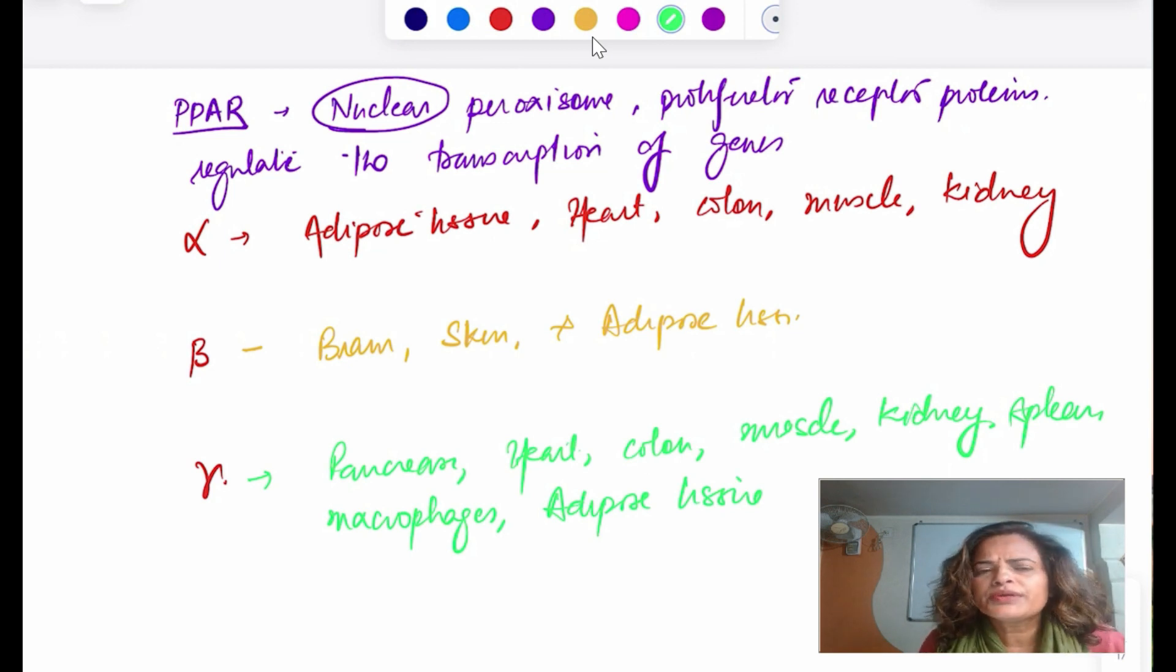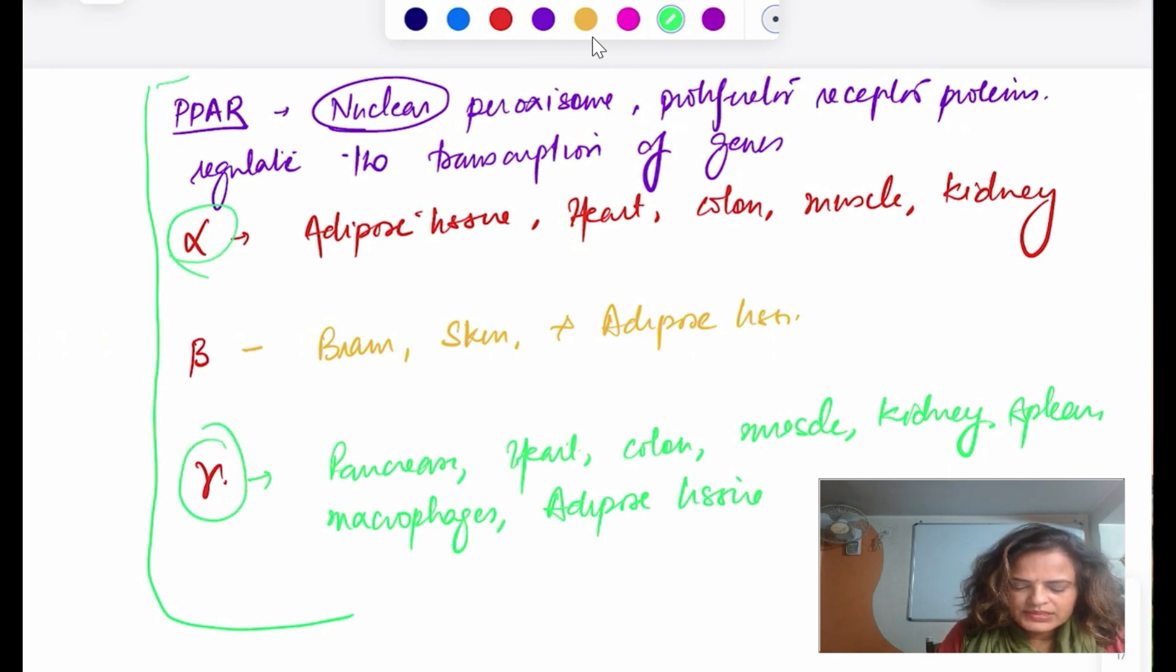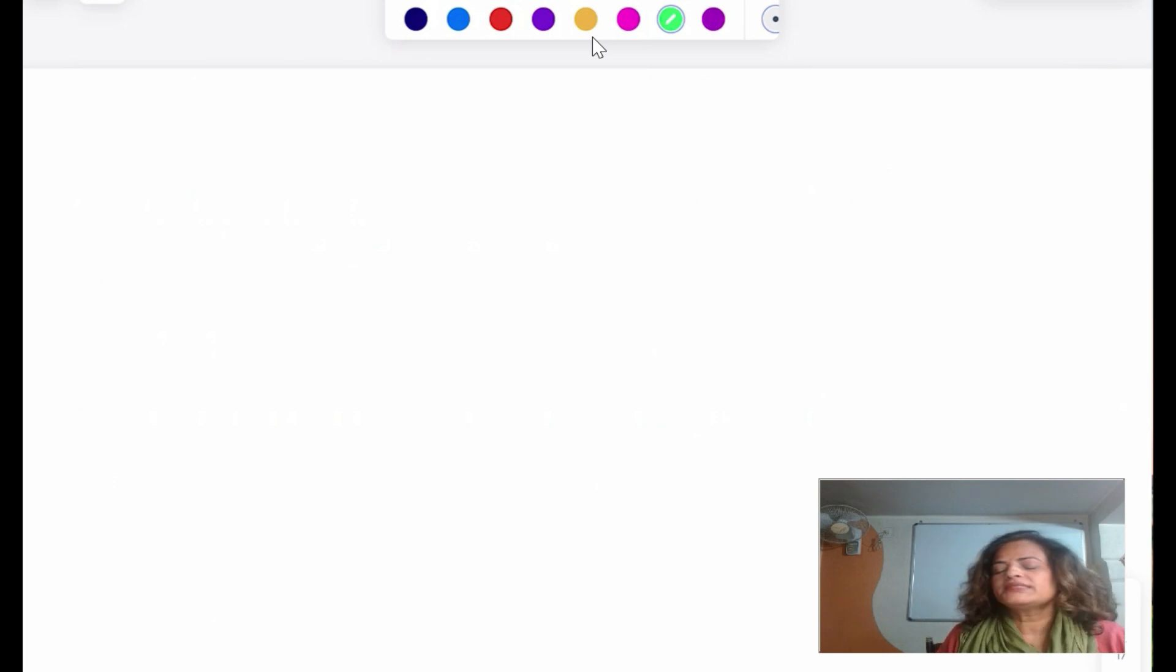This is a brief introduction. If you get a short note, you may write about this. This is for knowledge sake - you must know there are three types of PPAR receptors. Otherwise, if you get a short note, you don't have to attempt this, just write the mechanism of action. They are dual agonists with agonistic action at alpha and gamma.